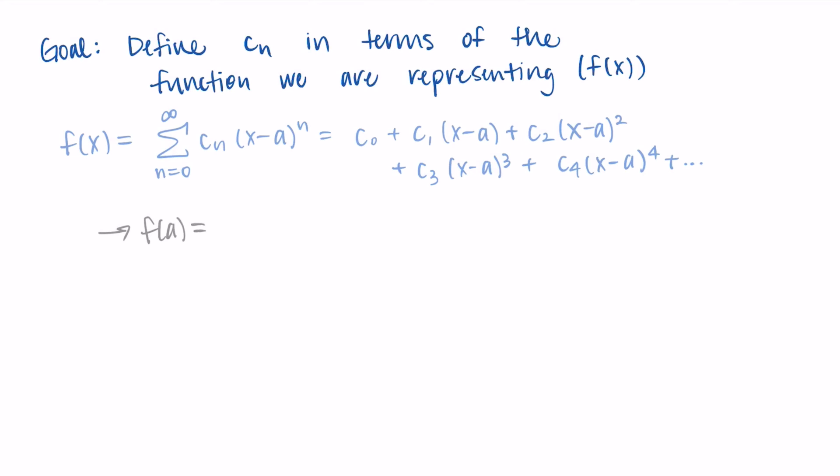The way we're going to do this is by substituting in the center value x equals a and taking derivatives. First, substituting a for x gives us c0 plus c1 times (a minus a) plus c2 times (a minus a) squared, and so on. All terms with (a minus a) go to zero, so we're just left with c sub 0. This tells us that the first coefficient is simply the function value at a.